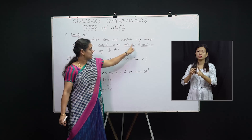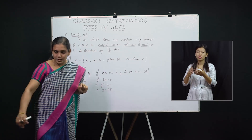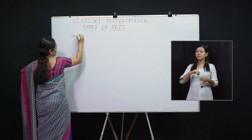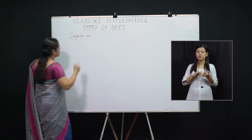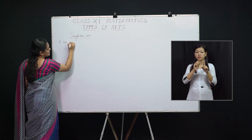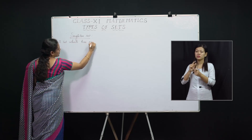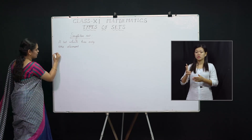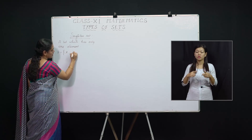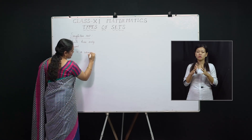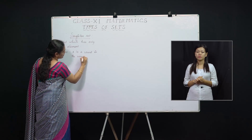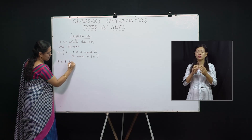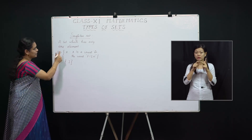So a set which does not contain any element is called an Empty Set. The other names are Void Set or Null Set, and it is denoted by Phi. The next one is Singleton Set — a set which has only one element. For example, B is the set of all x such that x is a vowel in the word 'fish'. The only vowel present is 'i', so it has only one element. Therefore it is a Singleton Set.